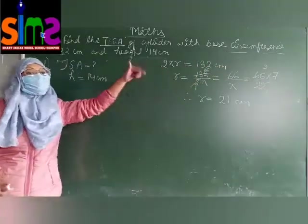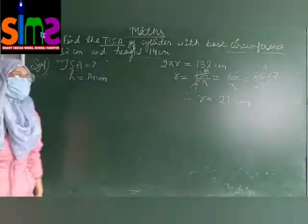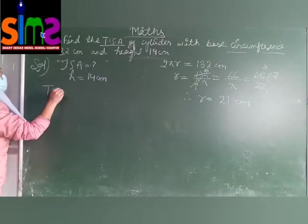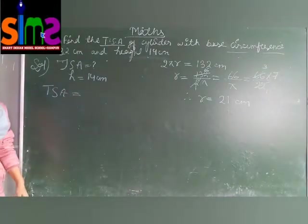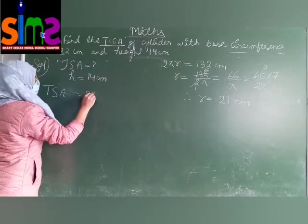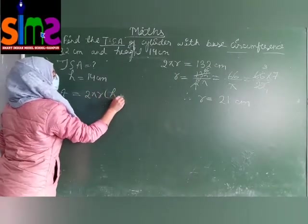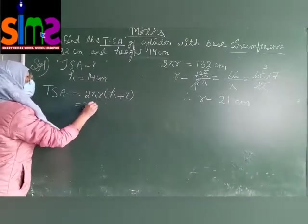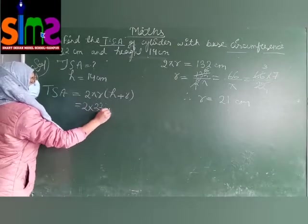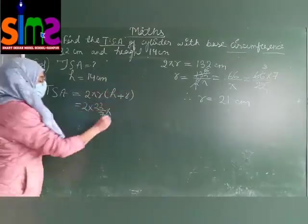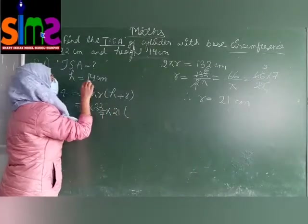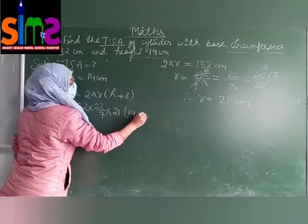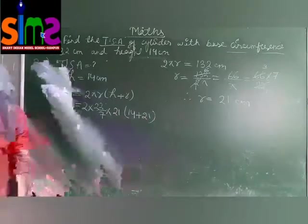That is why the unit of radius is also in centimeter. Now what is the formula of TSA of cylinder? 2 pi r times h plus r. Apply the value 2 times 22 upon 7 times 21.